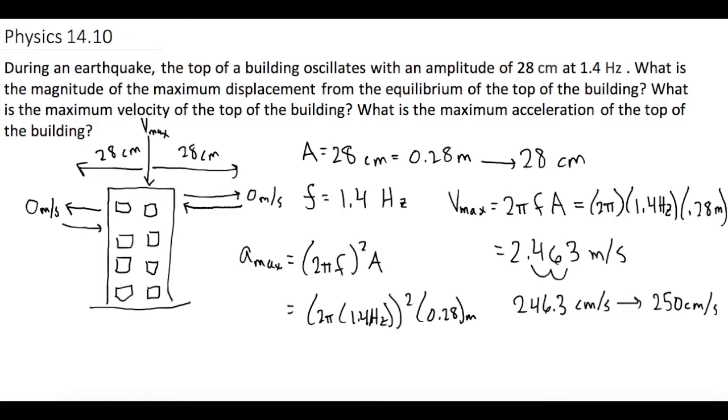This gives us an acceleration max of 21.67 meters per second squared. They want that in centimeters, so let's move the decimal over. That gives us 2167 centimeters per second squared, or rounded, 2200 centimeters per second squared.